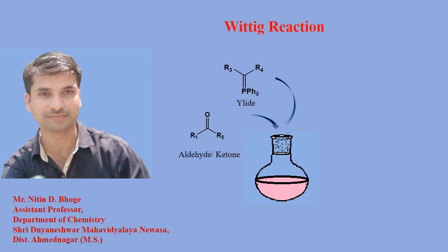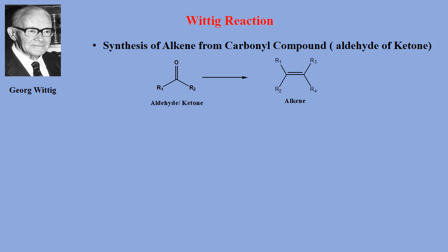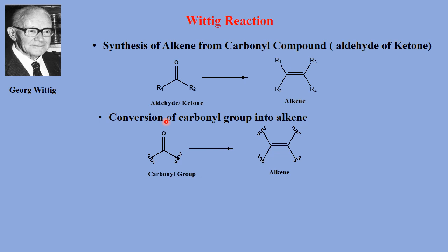The Wittig reaction is an organic reaction in which an aldehyde or ketone reacts with phosphorus ylides to form an alkene. George Wittig in 1954 reported a method of synthesizing alkenes from carbonyl compounds. So the conversion of a carbonyl group — that is, aldehyde or ketone — into an alkene is the key transformation.